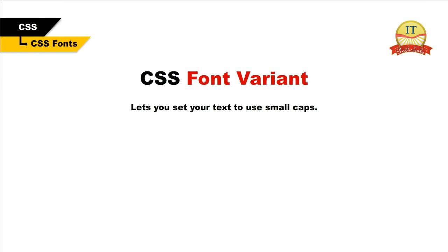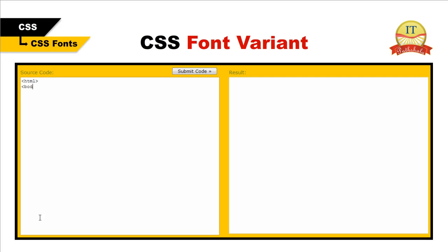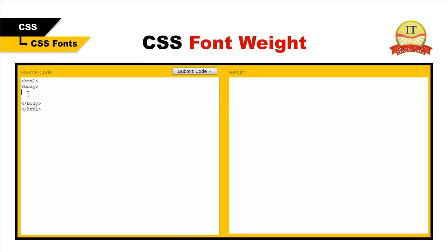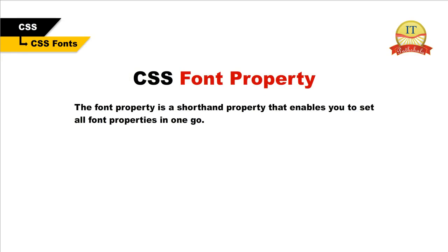CSS font-variant lets you set your text to use small caps. CSS font-weight — this property lets you set your text to bold. The font property is also a shorthand property that enables you to set all font properties in one go.